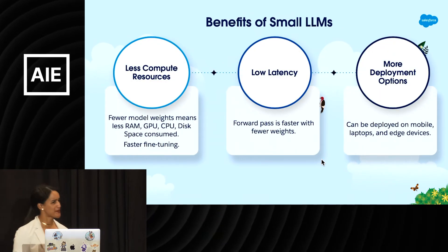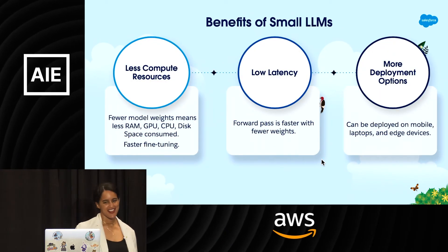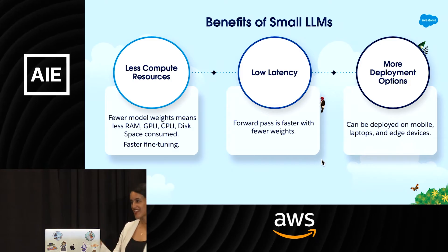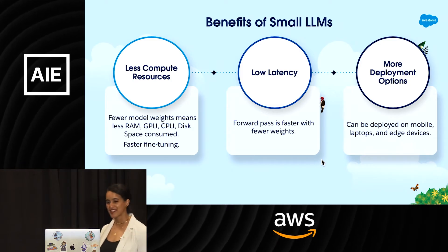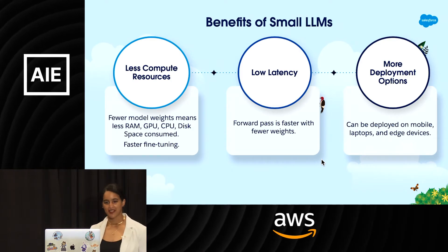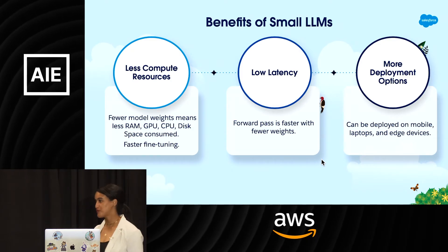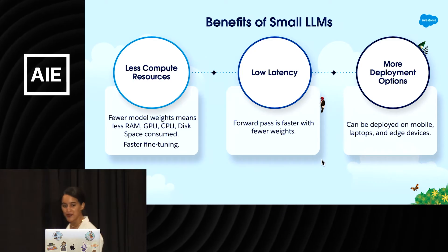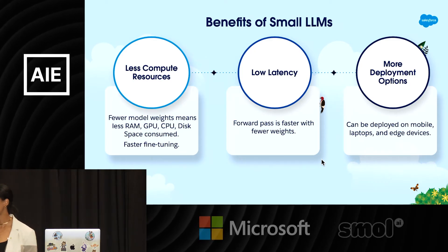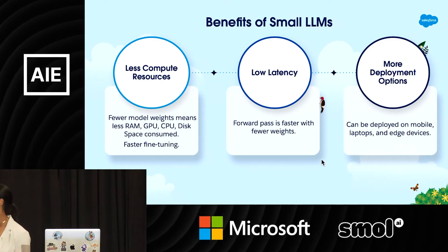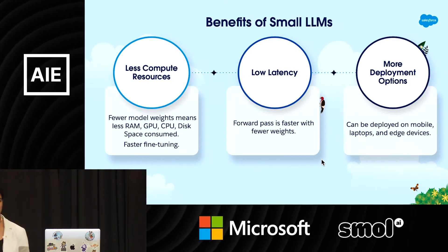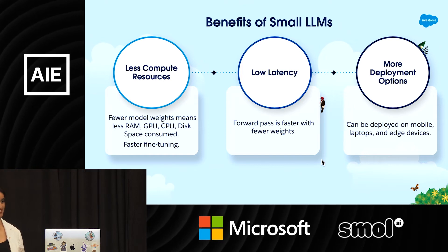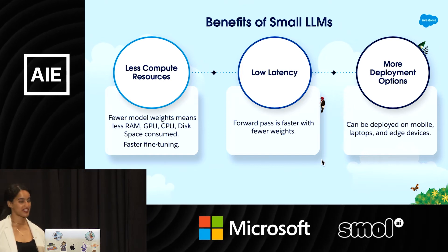In parallel, over the past several months we're seeing smaller models emerge — and when I think about small LLMs, I'm thinking models that are 13 billion parameters or less. They're emerging for very good reason: there are so many benefits. With fewer parameters and fewer weights, they consume less RAM, less GPU, less CPU, less disk space, and they're faster to fine-tune. They're super resource efficient.